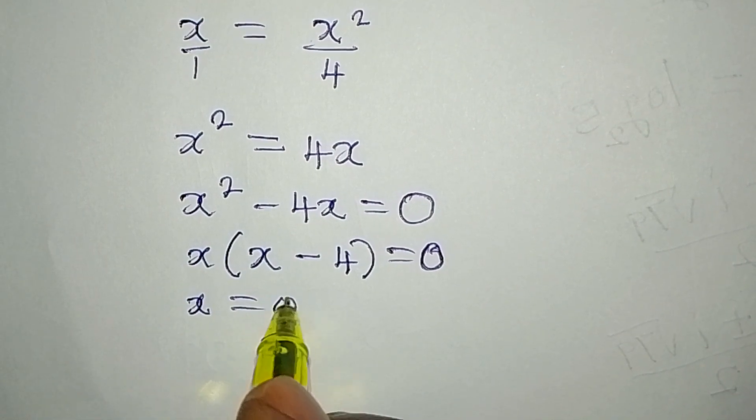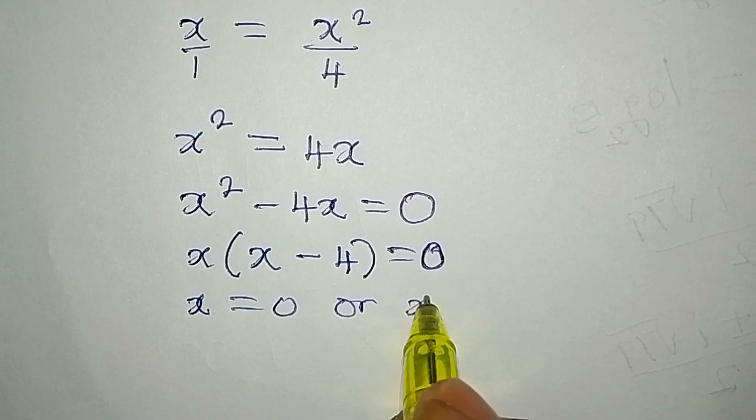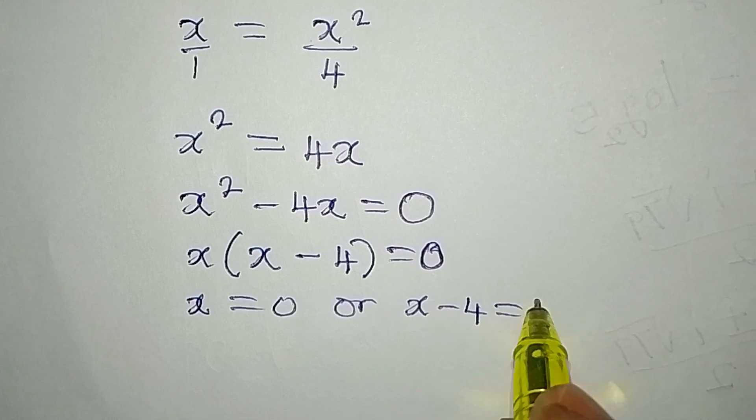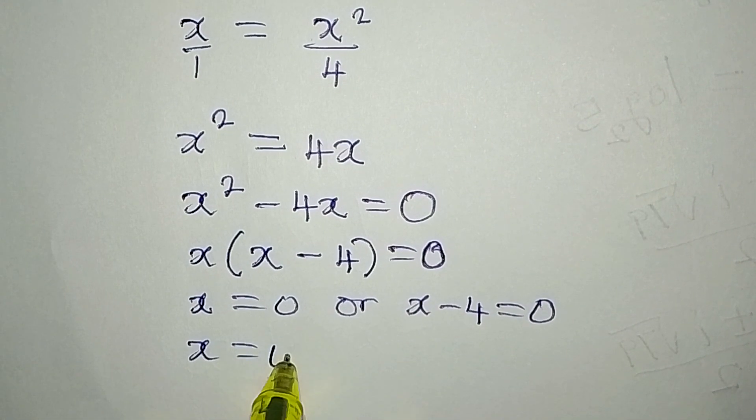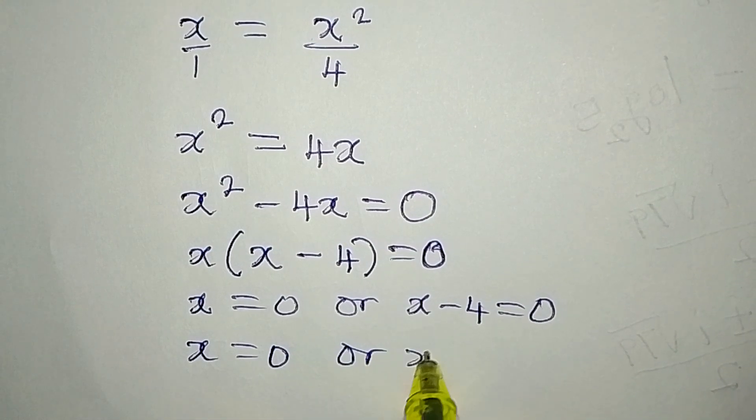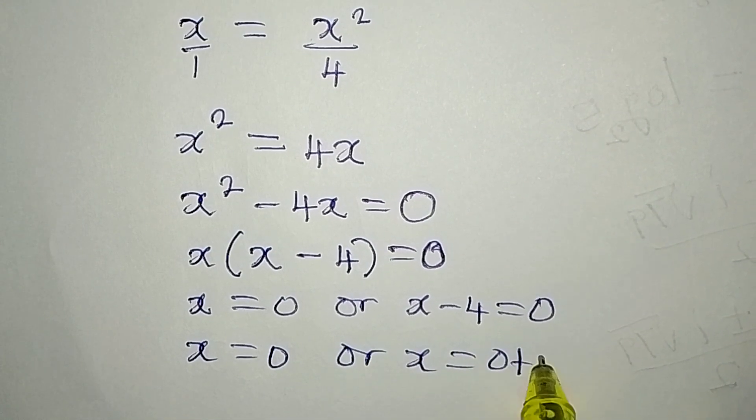x here is equal to 0, or x minus 4 is equal to 0. Now x is equal to 0, or x is equal to 0 plus 4.